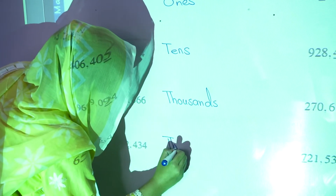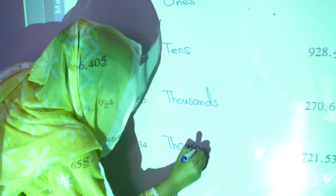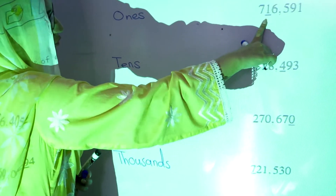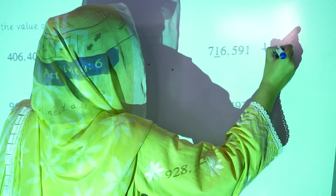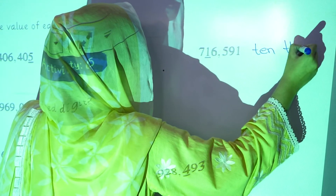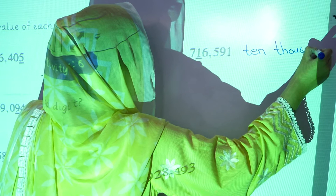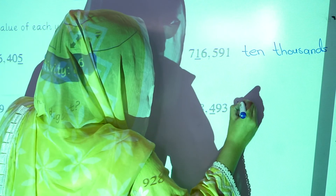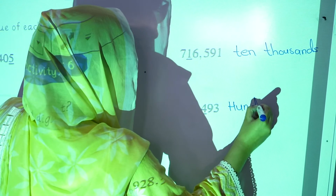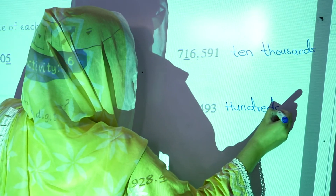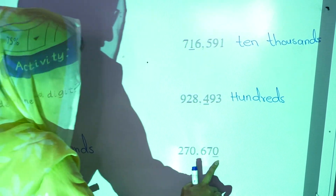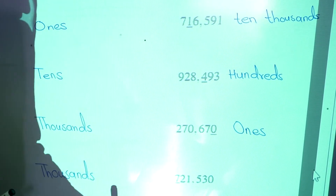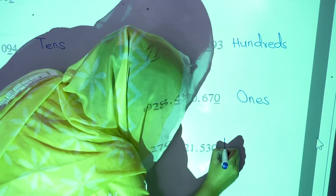The third digit is hundreds. This is also thousands. The place value of the fifth digit is ten-thousands. The third digit is hundreds. The first digit place value is hundreds. The first digit is ones. The place value of the sixth digit is hundred-thousands.